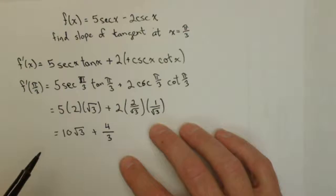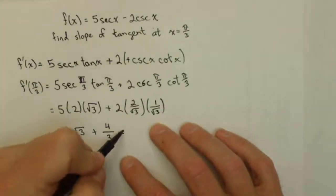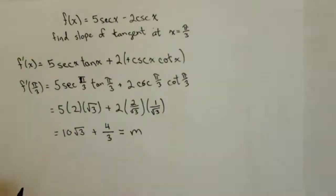If we needed it as a decimal we could calculate that, but we weren't asked to. This is the slope of our tangent line at π/3 for that function.